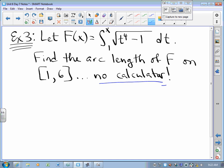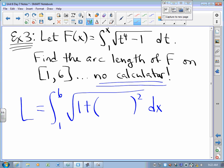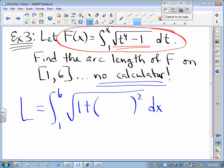You know that arc length is going to be the integral from 1 to 6 of radical 1 plus derivative squared dx. So all I need is the derivative of this with respect to x. How do I take the derivative of an integral from a numbery thing to a lettery thing? Well, that's the integrand with upper limit subbed in. Radical x to the 4th minus 1.